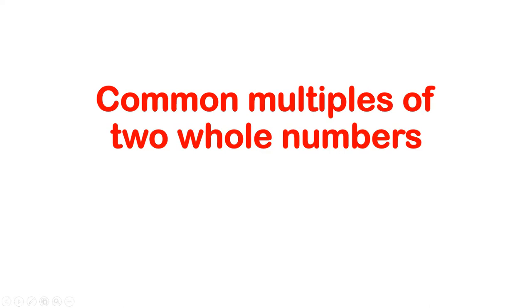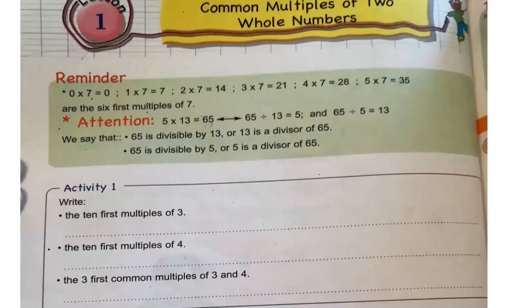So multiples never end. I can't stop at 20 — we can continue by adding two: 22, 24, 26, 28, and so on. Now we will do the first page in the math book, page 48. Please copy activity one, page 48, on your math books.